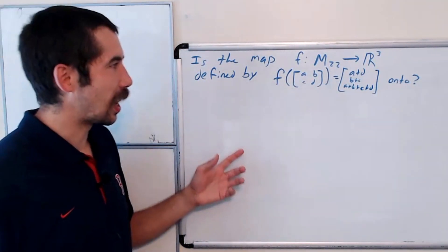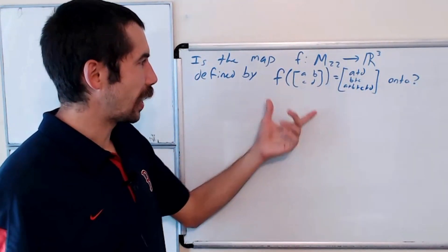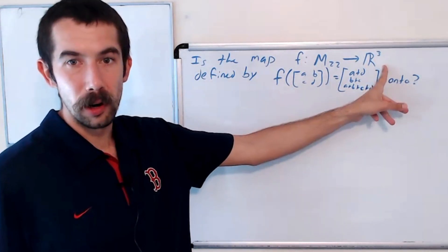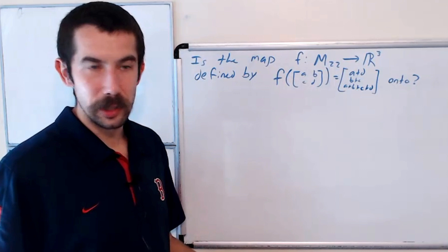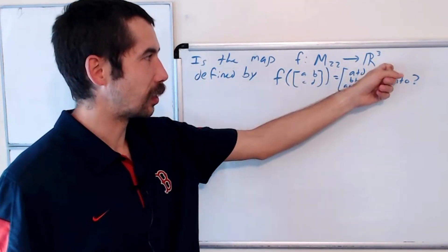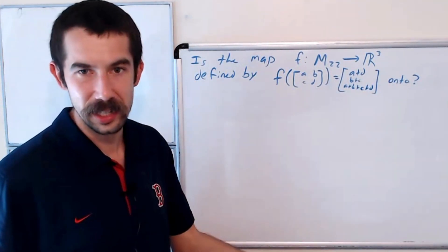Recall what it means to be onto. It means that the range of our function is equal to R3. So if our map is not onto, we should be able to find a vector in R3 that nothing gets mapped to.